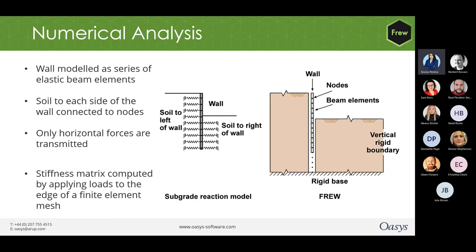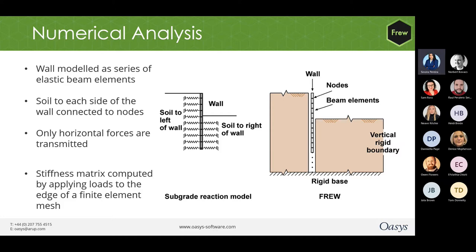In FRU, the wall is modeled as a series of elastic beam elements joined at the nodes. The lowest node is either at the base of the wall or at a prescribed rigid base in the ground beneath the wall. This is usually the level at which we expect to encounter rock or very hard formation. We need to be very careful while specifying the depth of this rigid base. If we choose a very deep base, the program might estimate high displacements for the wall. And if the selected depth is too shallow, then the results may not be realistic. The soil to either side of the wall is connected to it by springs, with only horizontal forces transmitted. There is also a vertical rigid boundary set to a reasonably far distance away, and setting this distance appropriately is very important as we will see when we discuss how to model shaft excavations in FRU.